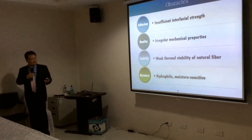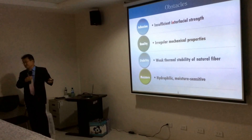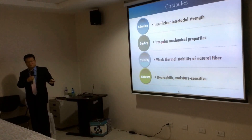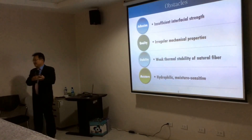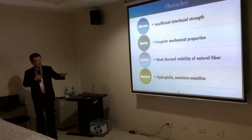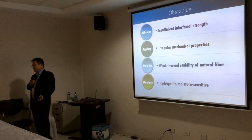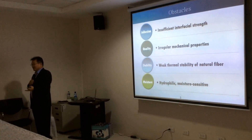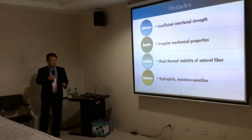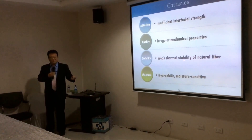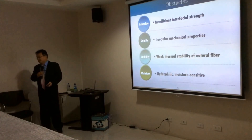However, natural fibers also have problems. There are four major ones: insufficient interfacial strength; quality irregularity, because sometimes you have good harvesting and sometimes you don't depending on where and when; and since the mechanical properties are irregular, whenever we design using a computer we have to over-design, usually using the weakest material properties.